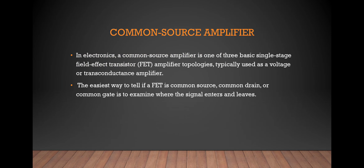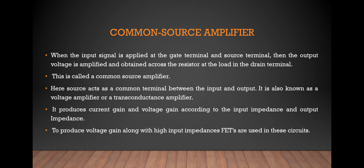The Common Source Amplifier is one of the three basic single-stage field-effect transistor amplifier topologies. It is used as a voltage or transconductance amplifier. A useful way to identify the amplifier topology as common source, common drain, or common gate is to examine where the signal enters and leaves. When the input signal is applied to the gate terminal, the output voltage is amplified and obtained across the resistor. This is called the common source amplifier, where the source acts as a common terminal between the input and output.